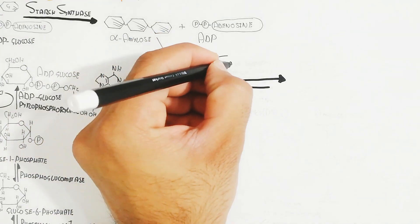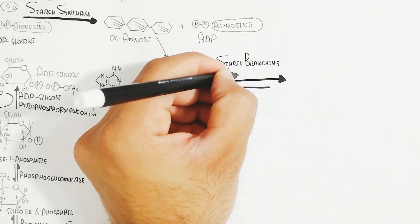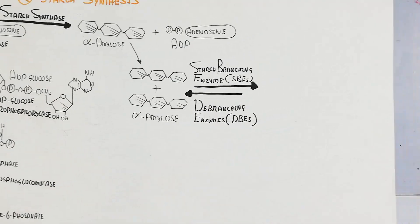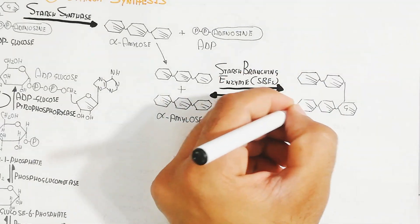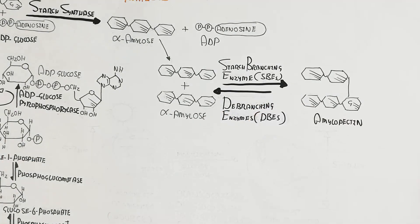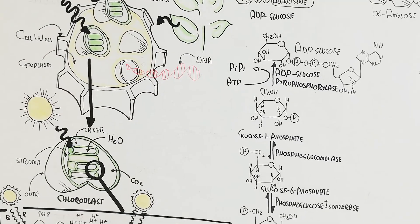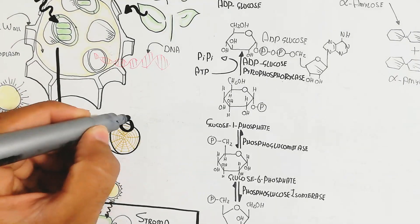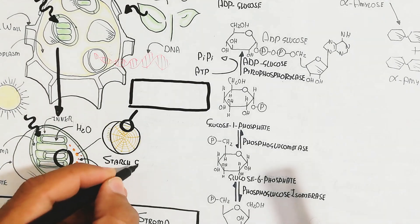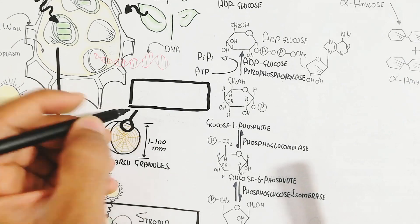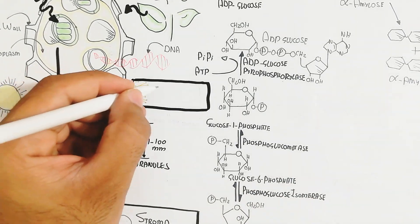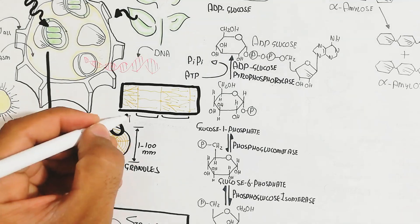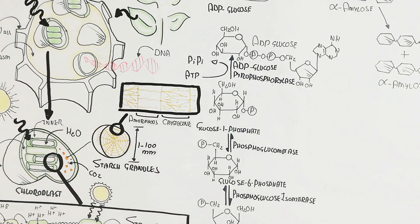Alpha-amylose chains combine together, and the starch branching enzyme (SBE) works to form amylopectin. Amylose requires alpha-amylase enzyme for digestion, while amylopectin is broken down by amylase in the digestive system. Starch granules are 1 to 100 micrometers in diameter and contain amorphous and crystalline regions: amorphous regions contain amylose, while the crystalline regions contain branched amylopectin.